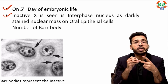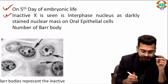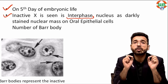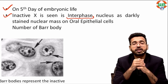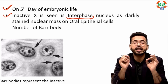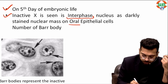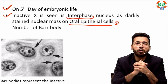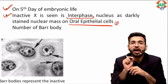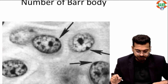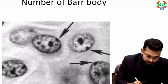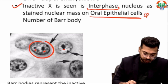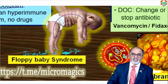One X is genetically active, and the other inactive X is seen in the interphase nucleus as a darkly stained nuclear mass. Normally, when you take a swab from oral epithelial cells and look at the nucleus in interphase, you see a darkly stained nuclear mass — these are nothing but Bar bodies. Inverted U sign.